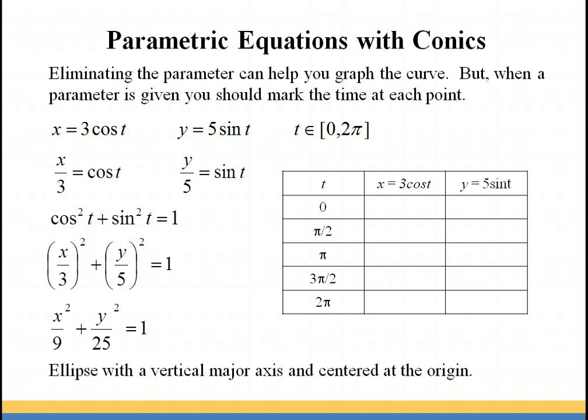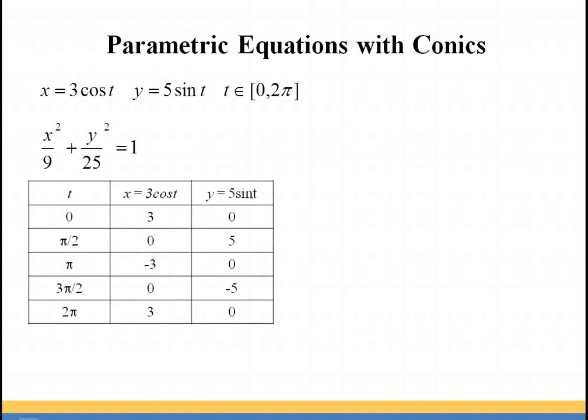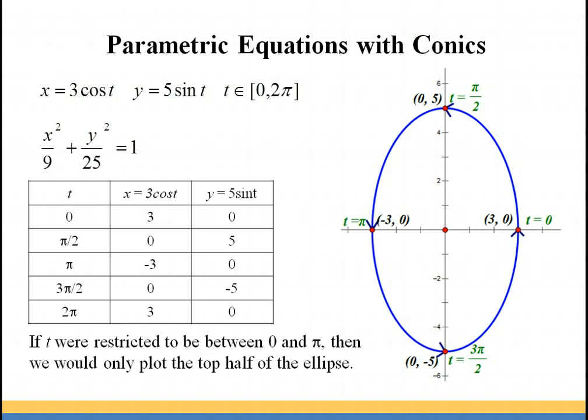Let's find some ordered pairs. At t equals 0, x equals 3 and y equals 0, giving the ordered pair (3, 0). At t equals π, you have (−3, 0), and at t equals 2π, you have (3, 0) again. At π/2 and 3π/2 you have points on the major axis: (0, 5) and (0, −5). Plotting these gives the ellipse. If we restrict the domain to 0 to π, we get only the top half; π to 2π gives the bottom half. For the right branch of a hyperbola, you'd restrict to between −π/2 and π/2.